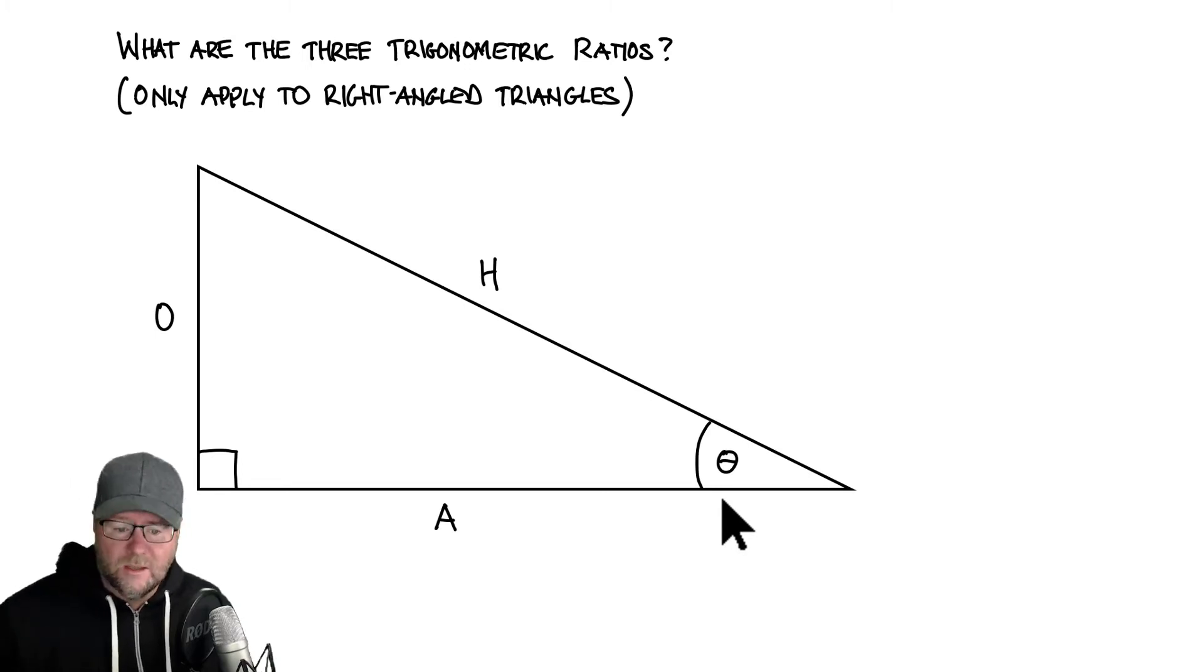We've got three sides, hypotenuse, opposite and adjacent. Now our trig ratios are just ratios like one side divided by the other. And there's three of them.